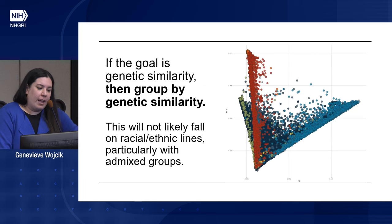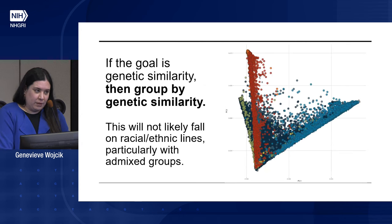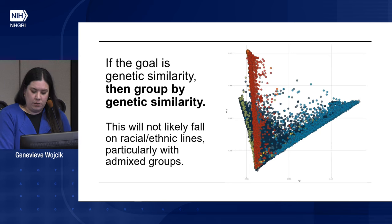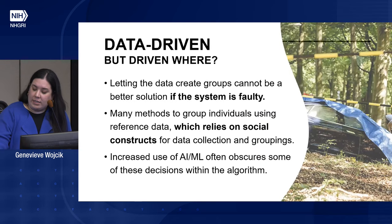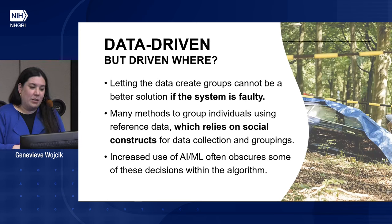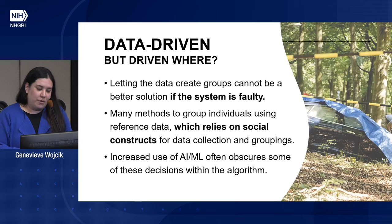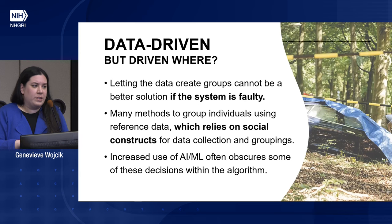As some preliminary evidence for a method that might address part of the problem: if your goal is genetic similarity, then you should just group by genetic similarity. You shouldn't be using broad social construct terms to capture what you're trying to do. This will not likely fall on the racial-ethnic lines you think it is, particularly with recently admixed groups where there's a lot of diversity within the group and shared ancestry across groups. This is particularly important as we move toward data-driven approaches — data-driven is everywhere, but driven where? You cannot have a better solution if the input is faulty. This goes to a lot of methods that rely on current reference data, which already exists and relies on social constructs for how people were recruited and grouped. And increased use of AI and ML often obscures some of these decisions within the algorithm. For example, one paper in the supplement of methods used a random forest classifier clustering algorithm where if somebody's likelihood is above 0.3 for more than two groups, they arbitrarily assigned people to groups — and those assignments directly fall on the lines of hypodescent, the one-drop rule, and recapitulate the axis of subordination in sociology. Even if the data drives us here, even if it's only a small portion of people, you can use these methods to recapitulate racist policies that follow through in many papers. Machines are not going to solve all our problems.